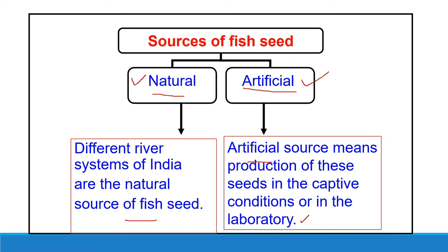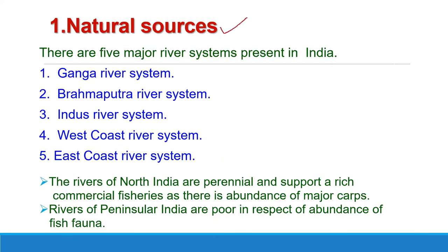The freshwater fish resources of India are found mainly in five major river systems studied in the previous lecture: the Ganga, Brahmaputra, Indus, West Coast, and East Coast river systems of Peninsular India. Riverine fish resources of India reflect their diverse geographical and climatic conditions. Different river systems show different fish fauna depending on their particular ecological conditions. Rivers of North India are perennial and support rich commercial fisheries, while rivers of Peninsular India are poor in abundance of fauna.